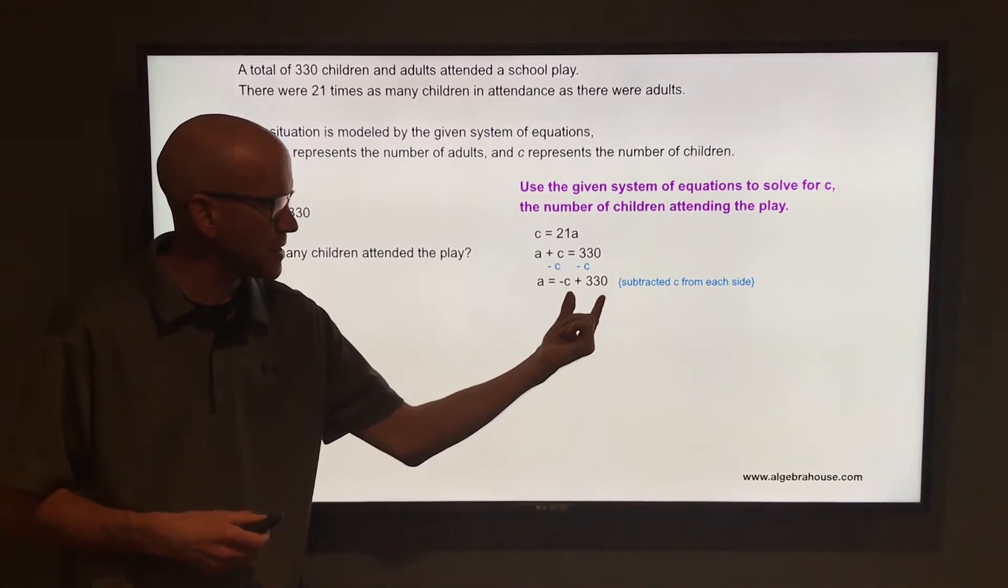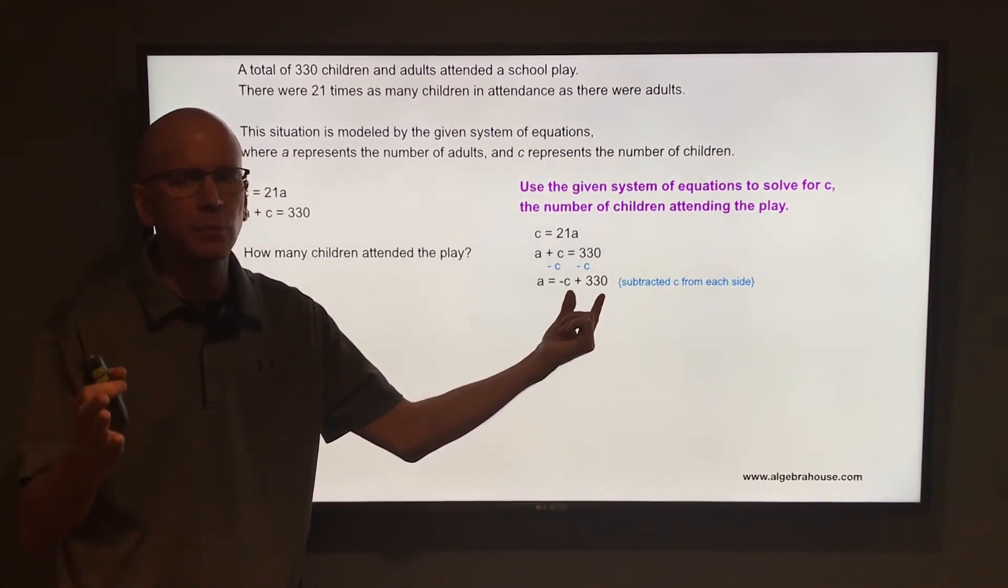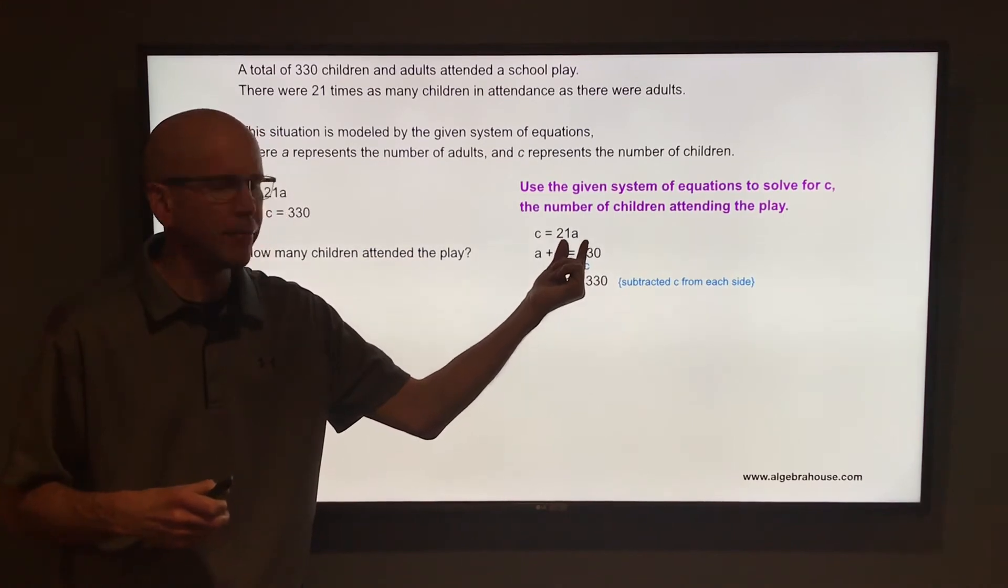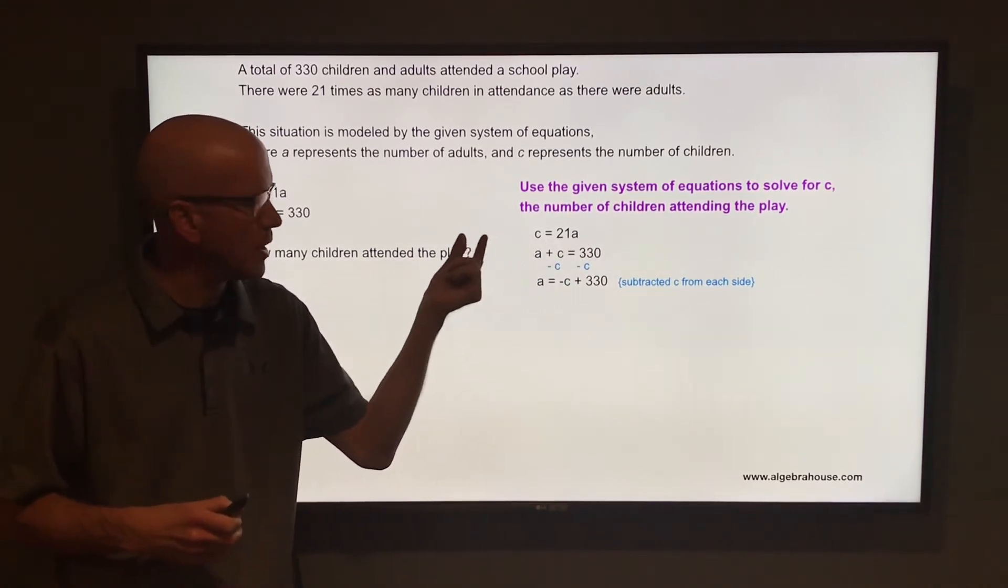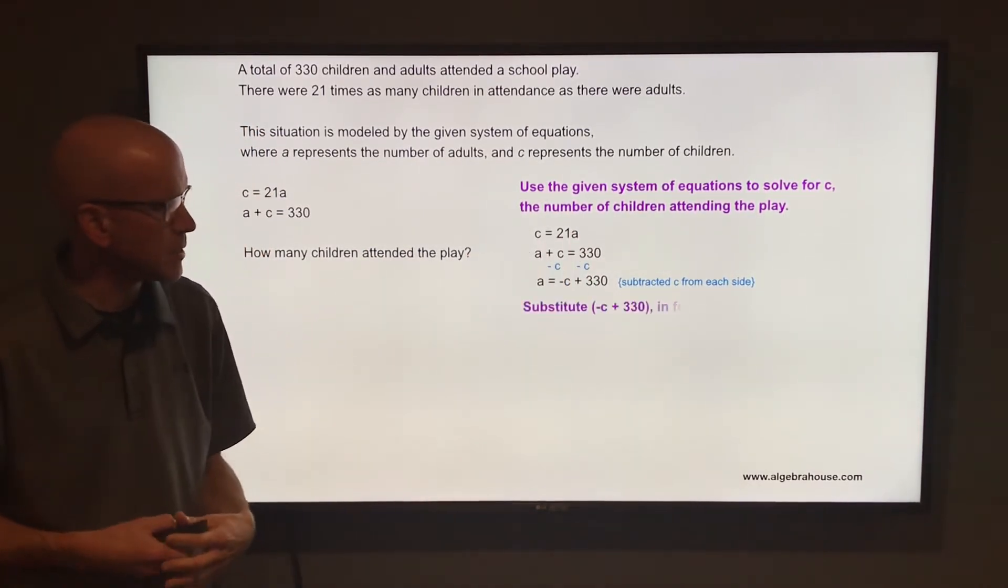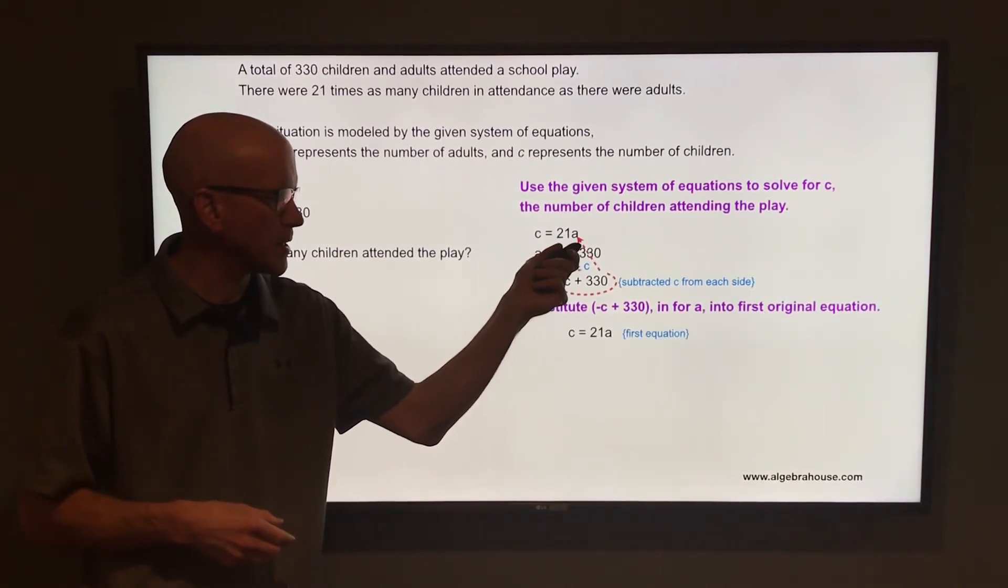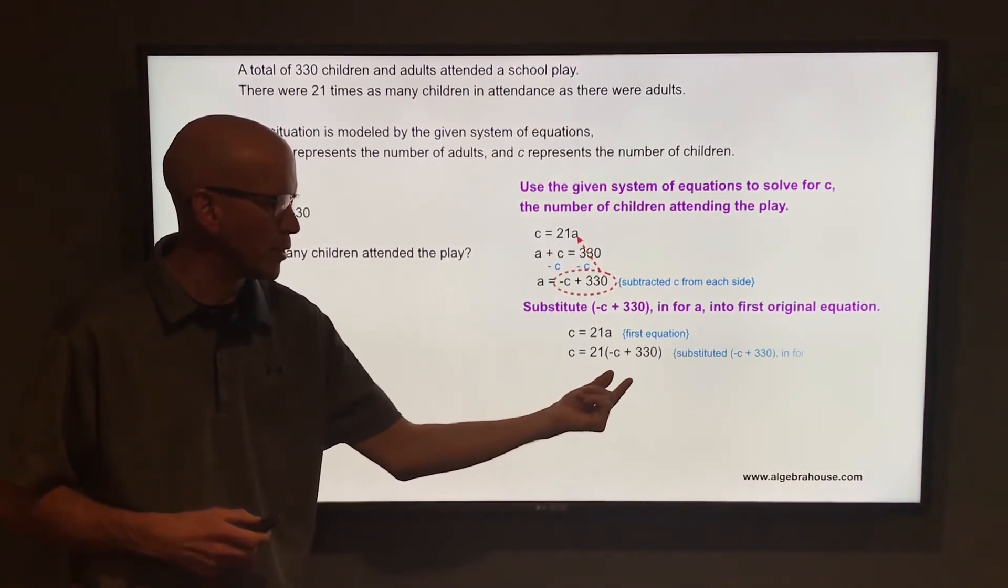We're going to take that negative C plus 330, because that's what A is equal to, and substitute that in for A into the top equation. Then we'll be able to solve for C. So take out that A in that top equation and replace it with negative C plus 330.